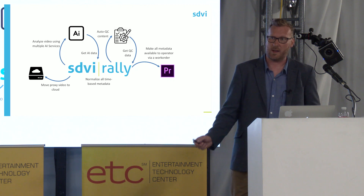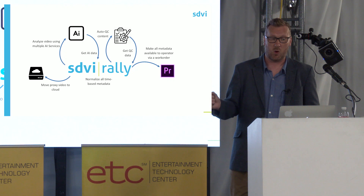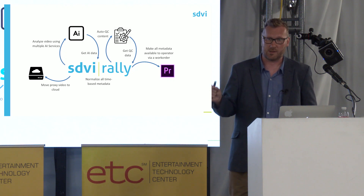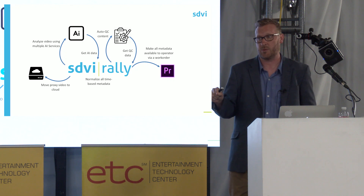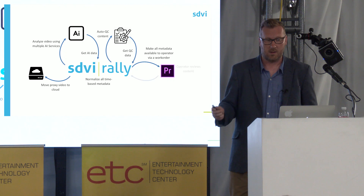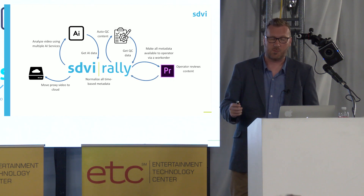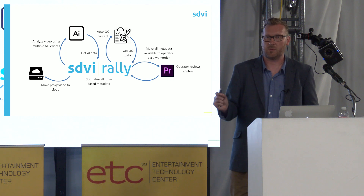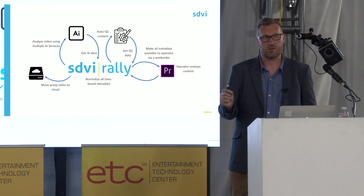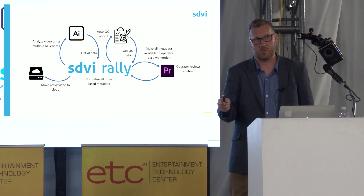What we've actually done is we've built a panel for Adobe Premiere that will take work orders from the Rally system. As an operator, you get a work order list that says this is the next clip that's the highest-priority thing I need to process. You load that into the work order list, make your decisions, and then push it back into the platform. Once it gets back into the platform, that's when you take those decisions about what was okay, what was not okay, create the new version, and conform that in the cloud.